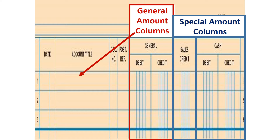We can rename these columns in our heads: sales credit means we've made a sale, cash debit means we're going to receive cash, and cash credit means we're going to pay cash. So if you see a transaction that says 'received cash,' you know to put it in the cash debit column. If we paid cash, it goes in the cash credit column. If we sold something, performed services, or received cash for sales, that's our sales credit column. It makes it easier so we don't have to write as many lines.